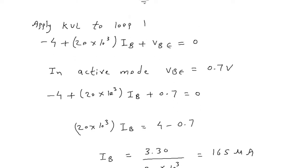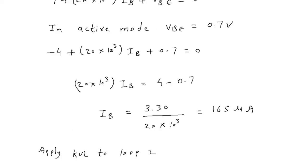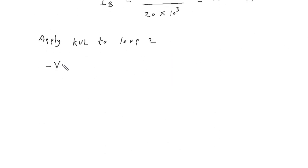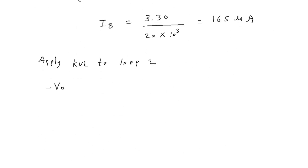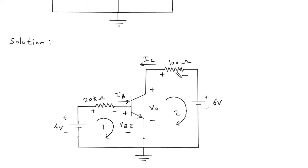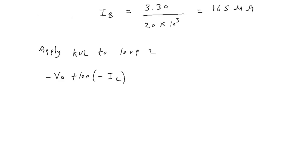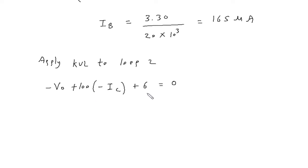Next, we will apply KVL to loop 2. Starting from this point: minus VO plus 100 into current — current is in the opposite direction, so minus IC — then plus 6 equals 0. So: minus VO minus 100×IC plus 6 equals 0, or minus VO minus 100×IC equals minus 6.